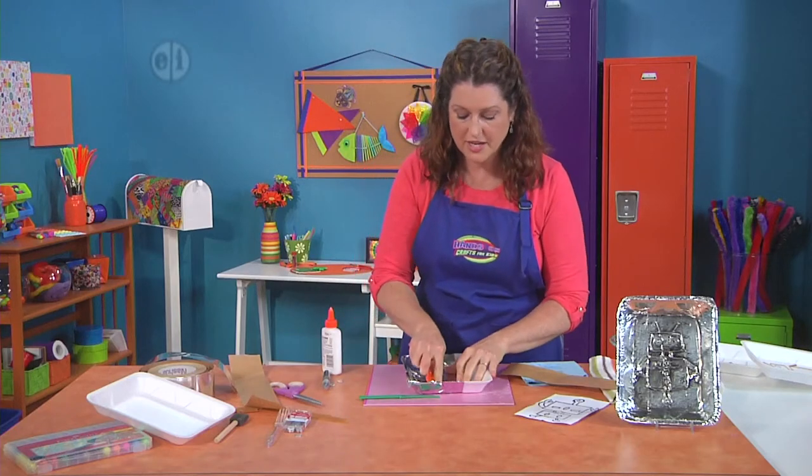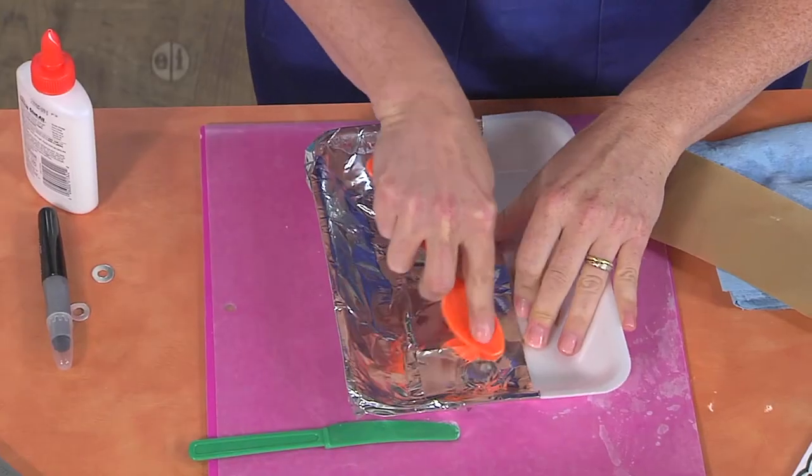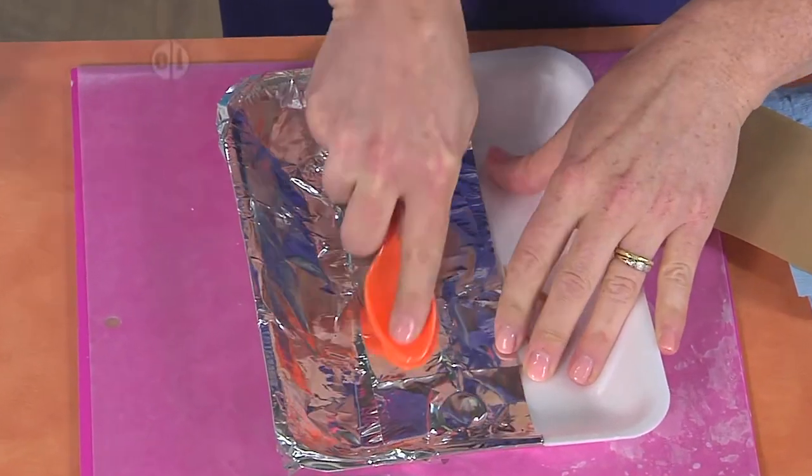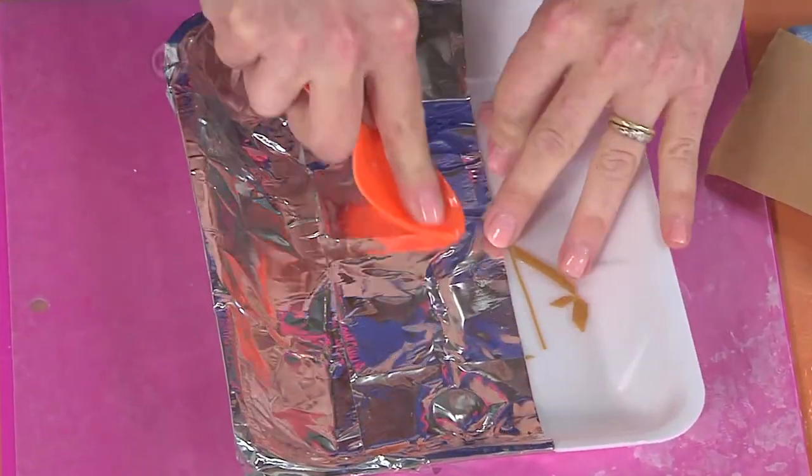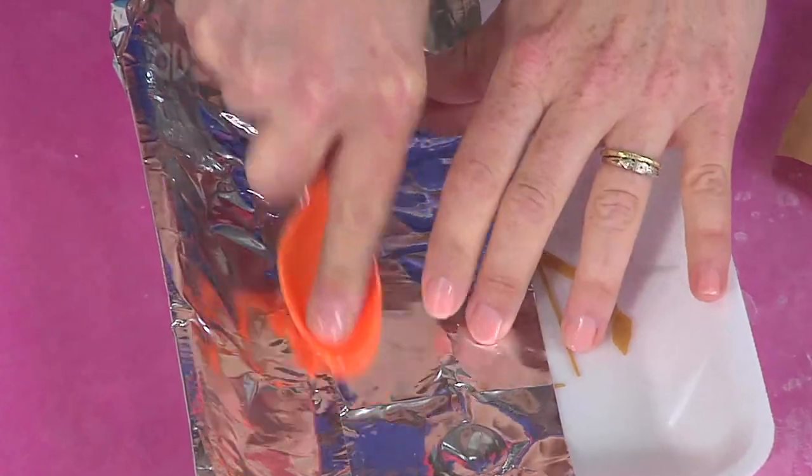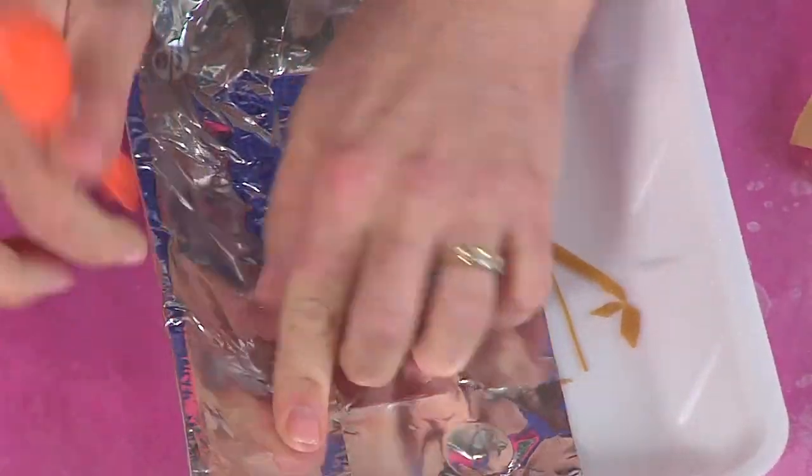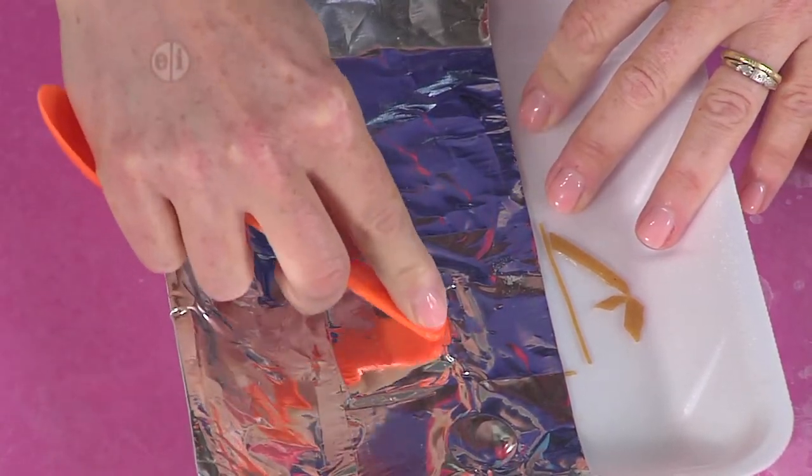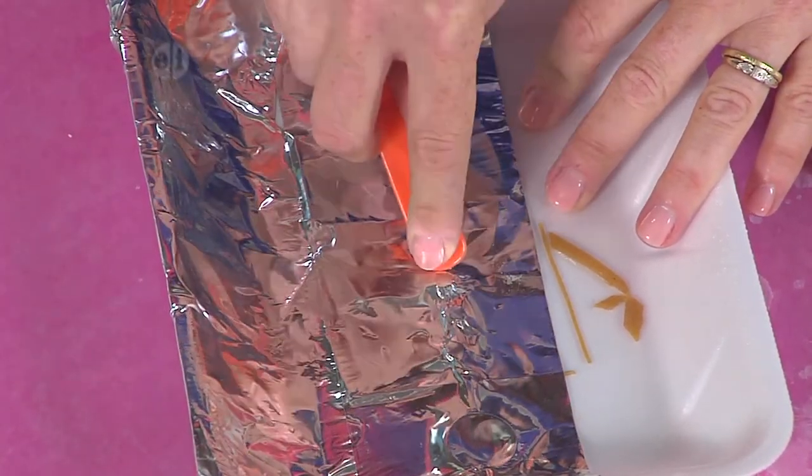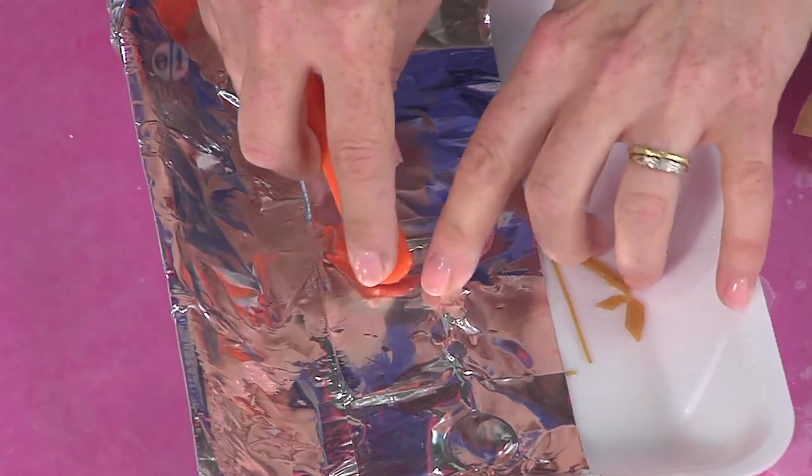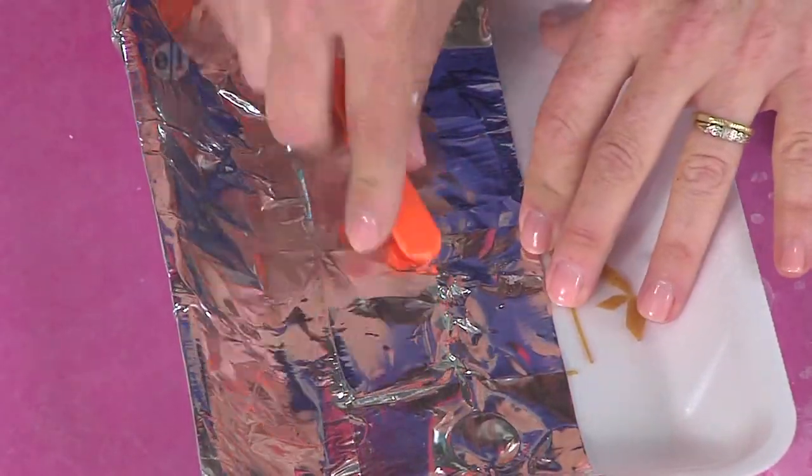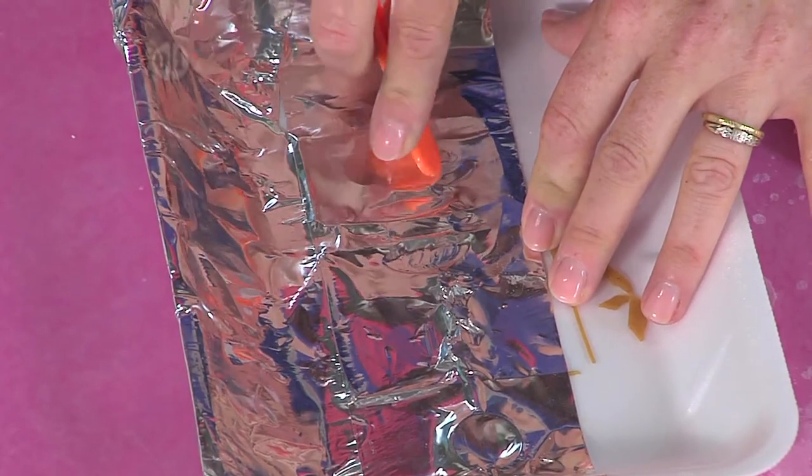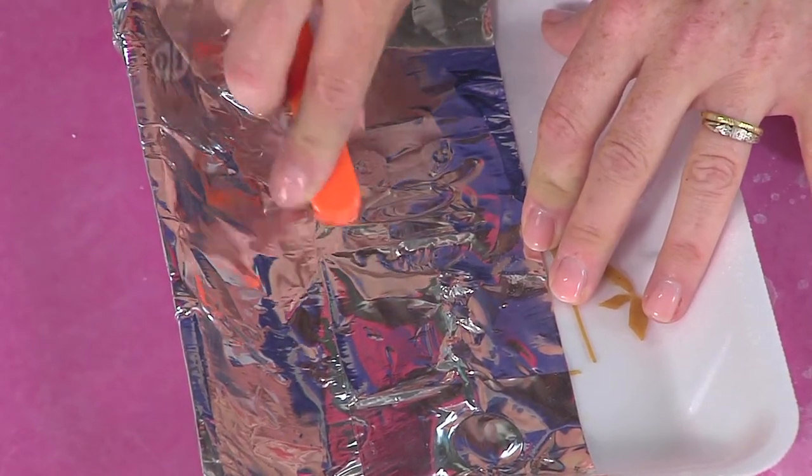So let me show you where the magic happens. If you take that spoon and you just start to kind of go over the top of your noodles like this, you will see your robot start to appear. And again, you can use the side of your spoon to burnish in, and then you can even use the end of a ballpoint pen to kind of poke in. But see, he's starting to magically appear as I burnish him down.